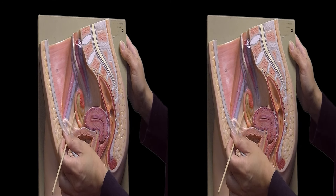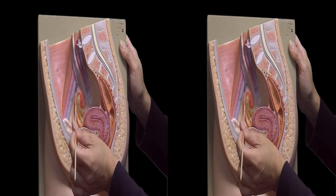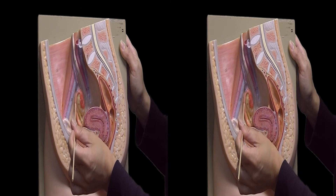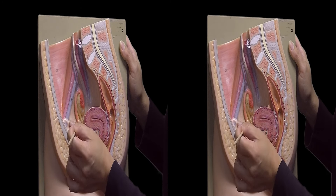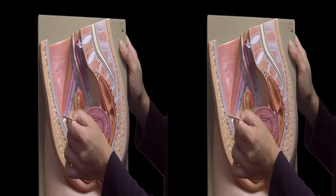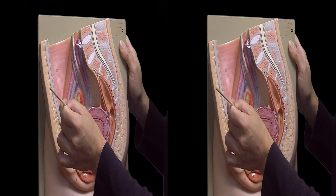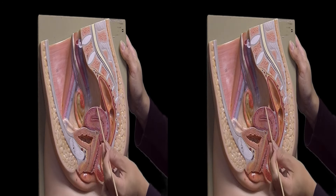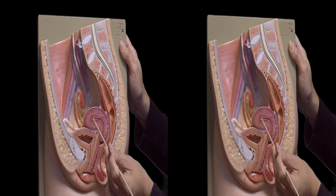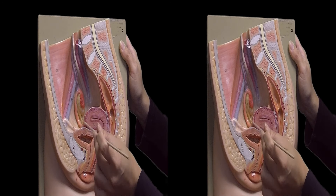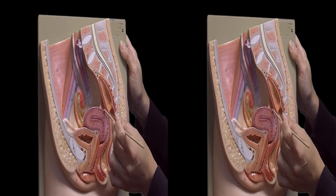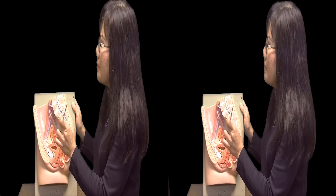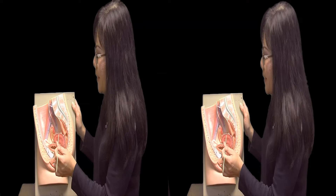And the passageway — you see here the structure — it is called the Uterine Tube, or Fallopian Tube, or Oviduct. This is the site for embryo implantation, and also the passageway for the fertilized egg to travel to the uterus.